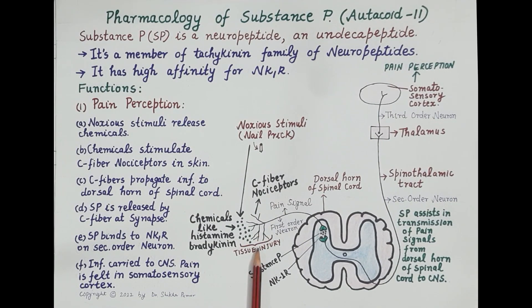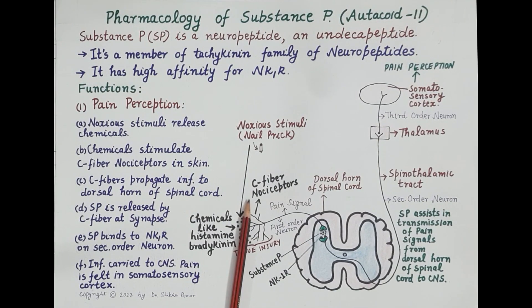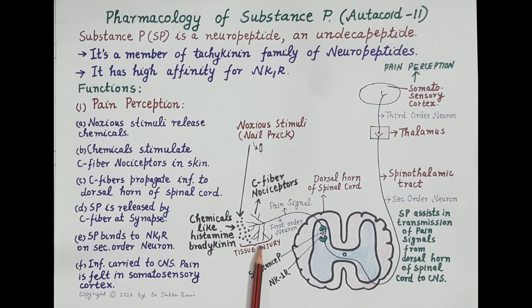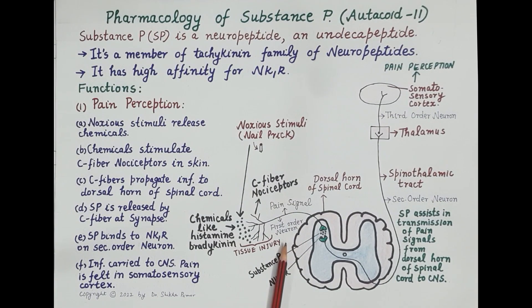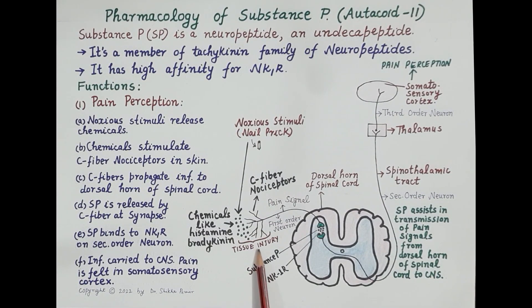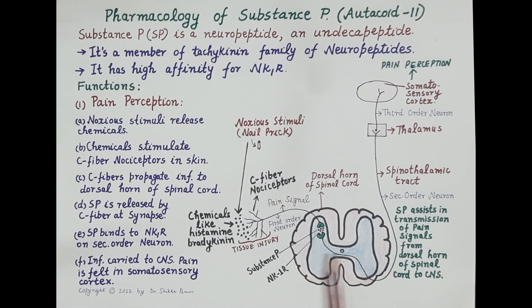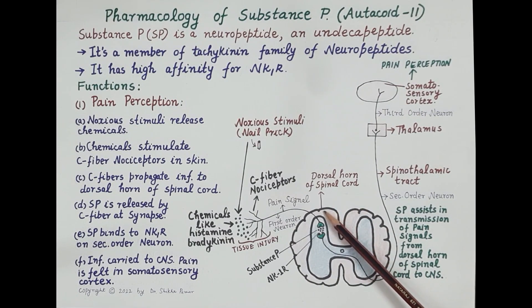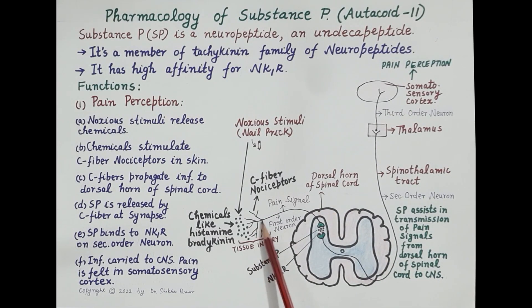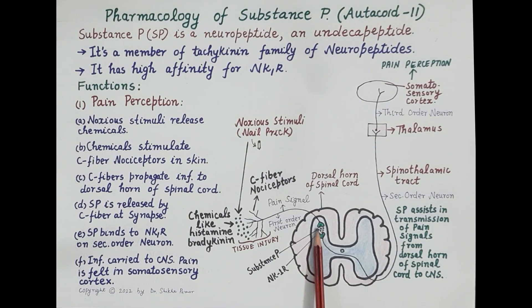These nerve endings can be myelinated or non-myelinated. Non-myelinated nerve endings are called C-fiber nociceptors. These chemicals stimulate C-fiber nociceptors, which are also called first order neurons. This information — that pain is generated at the site of tissue injury — is carried by these sensory nerves to the dorsal horn of the spinal cord.